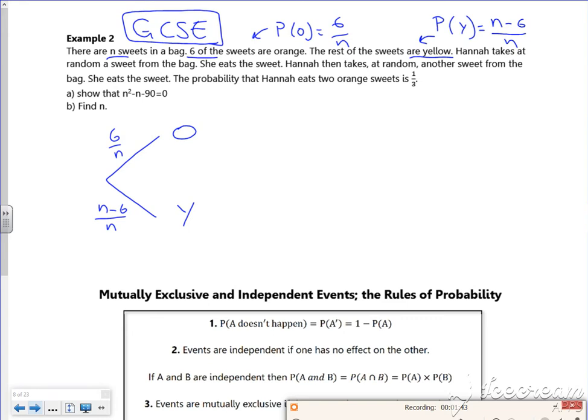So we take a sweet from a bag at random and we eat the sweet. Then take at random another sweet. So think about what's happened now. For the oranges, I've now gone down to five oranges. Instead of N, it's N take one. Now this one for the yellows is still N take six, but now N take one. And that's pretty tough to get your head around.